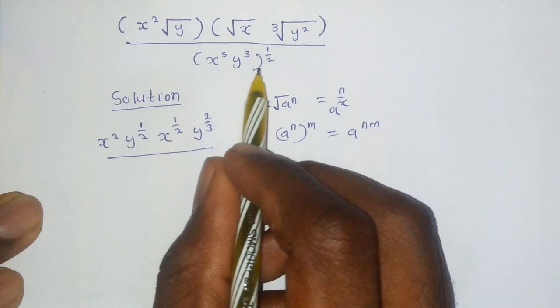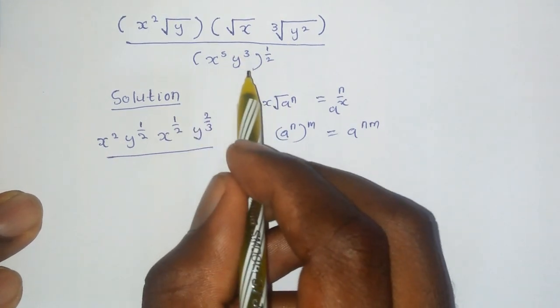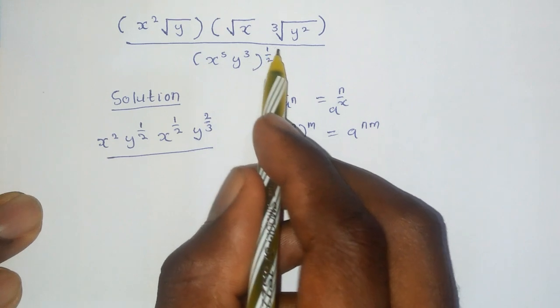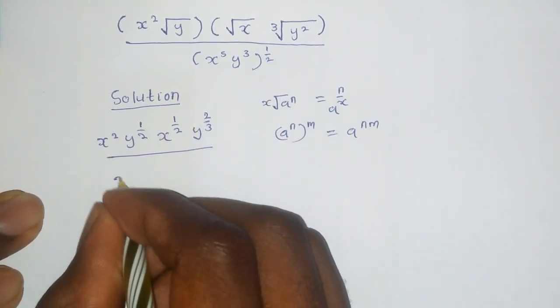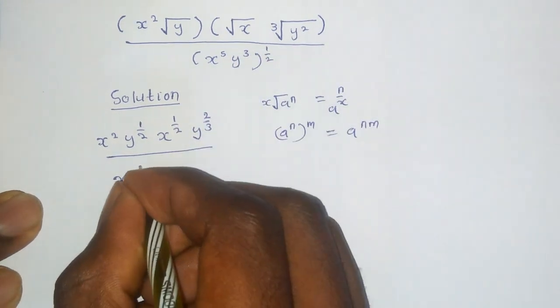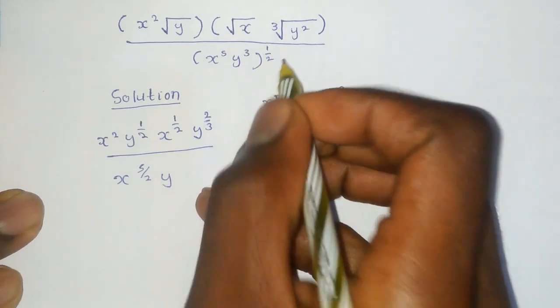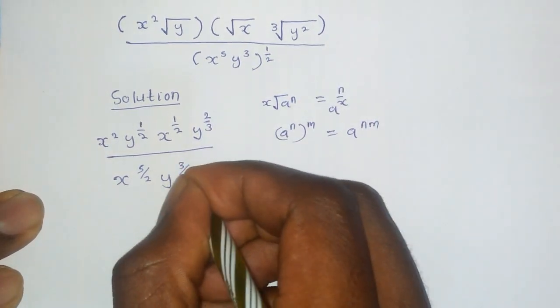Now, like for this one, you can see we are raising the whole expression to the power of a half. This means that it will be x raised to 5 multiplied by a half. That will be 5 divided by 2. y raised to 3 multiplied by a half. That will be 3 divided by 2.